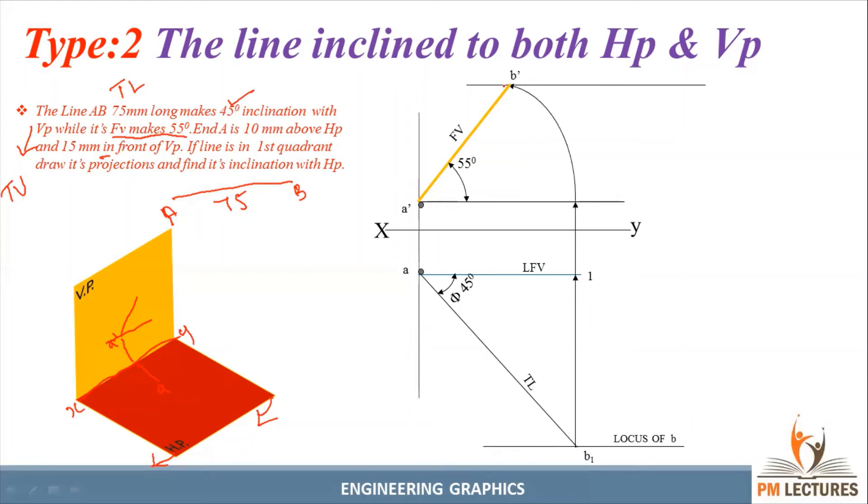Draw the line darkly. From B dash, draw a perpendicular line downwards vertically. Where it meets the locus of B, mark that point as B. This is the front view.